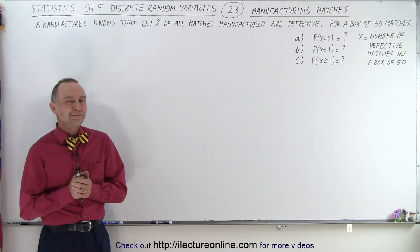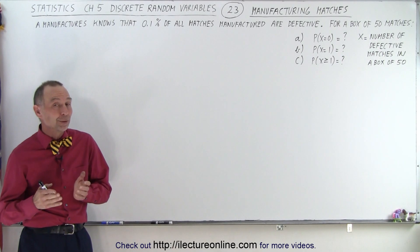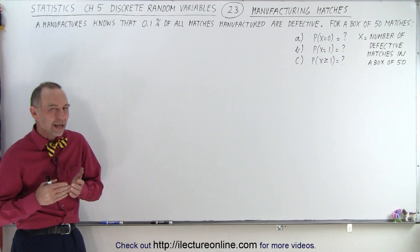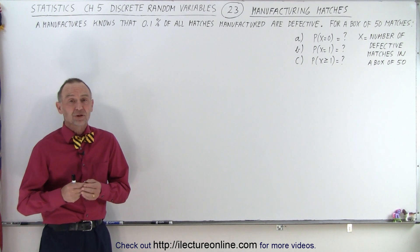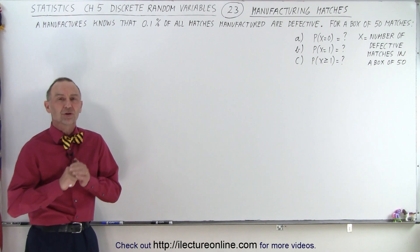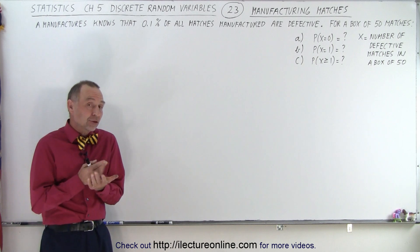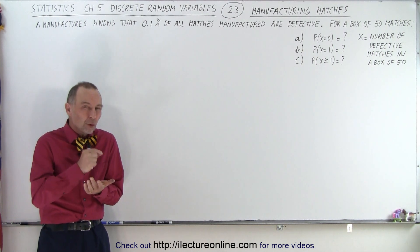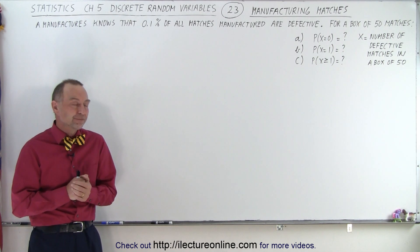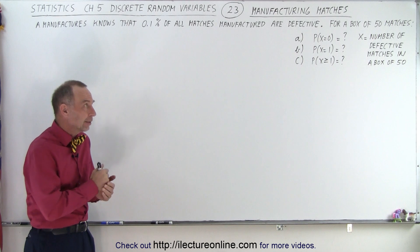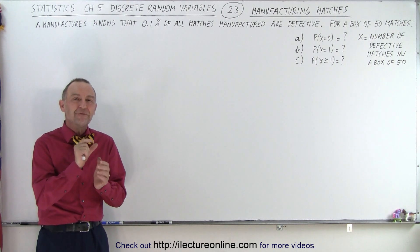Welcome to our lecture online. Here we have a nice example. Let's say that we have a manufacturer that manufactures matches, and the manufacturer knows that 0.1% of all matches produced are defective, and they sell matches in boxes of 50.